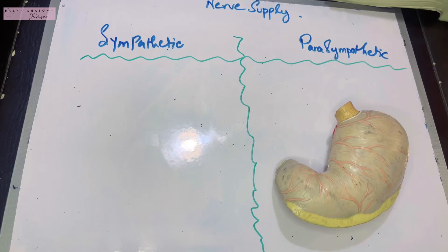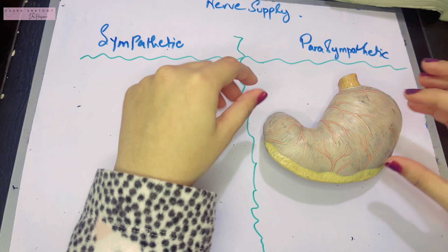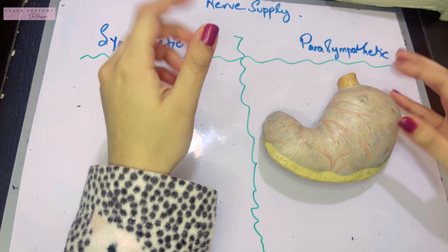Now let's discuss the nerve supply of the stomach. The stomach is a viscera and we all know that viscera are supplied by autonomic nerves because they're derived from splanchnopleuric mesoderm.